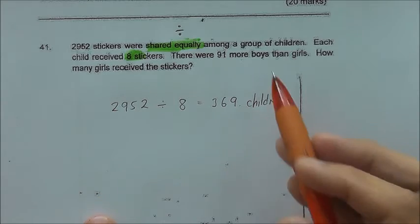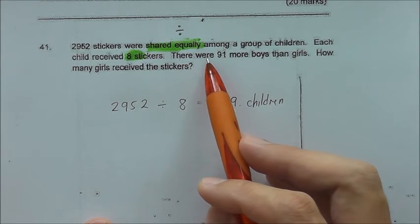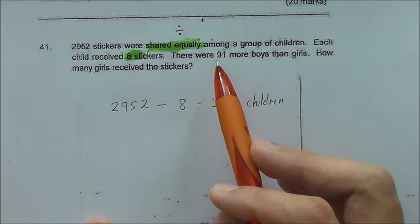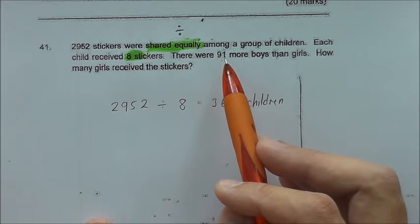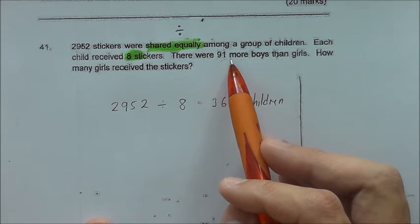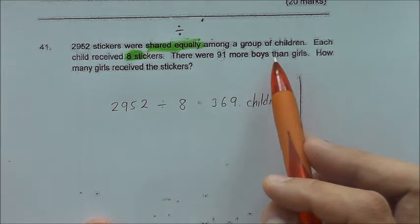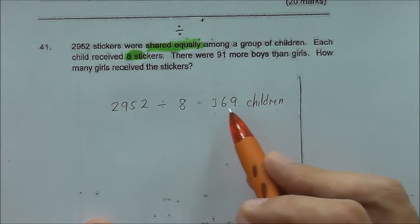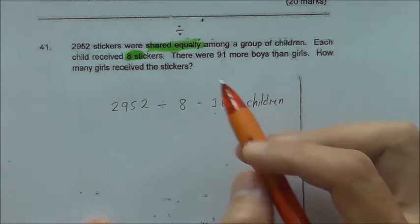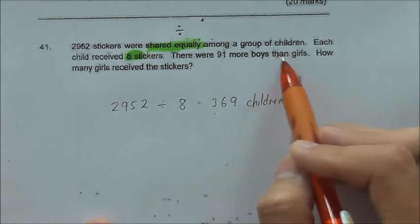And the second part, it's quite a popular question. Make sure that you can draw the correct model. Because once you can draw the correct model for this, you will be able to find out the number of boys and girls, given that the total is 369. So there were 91 more boys than girls.